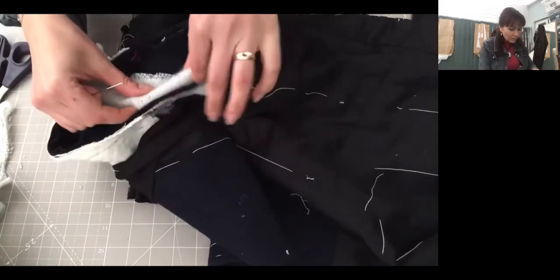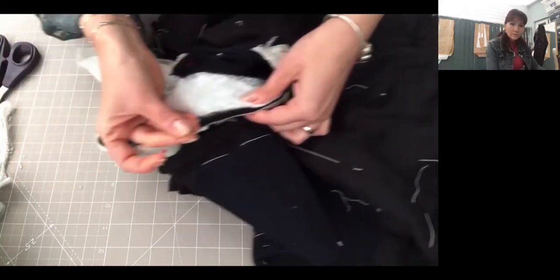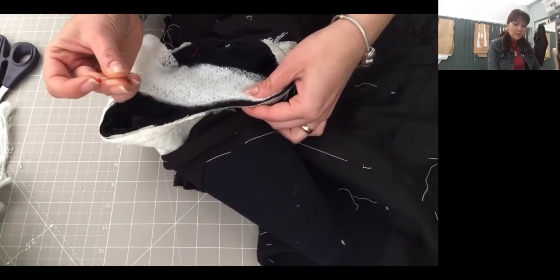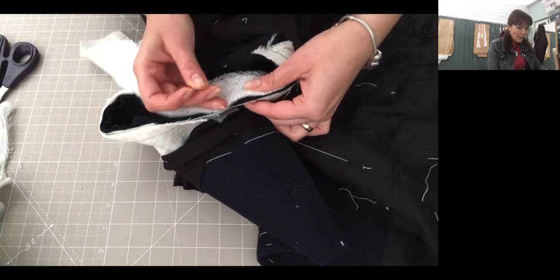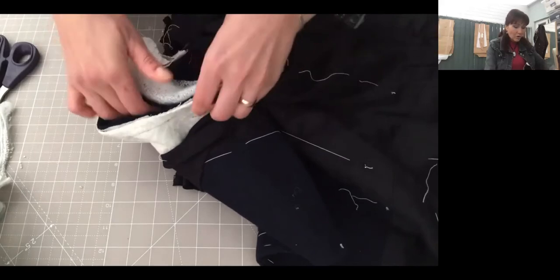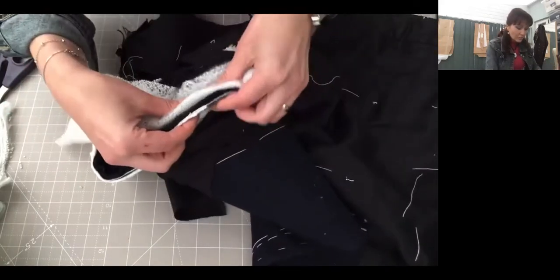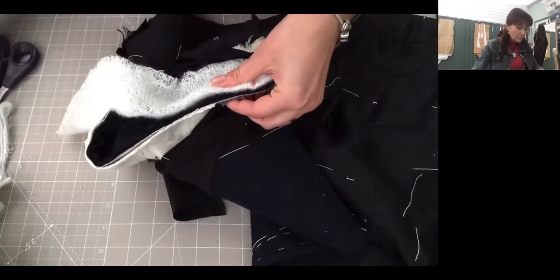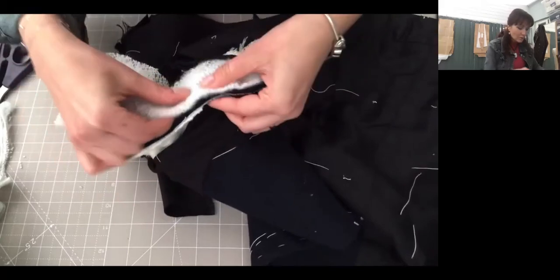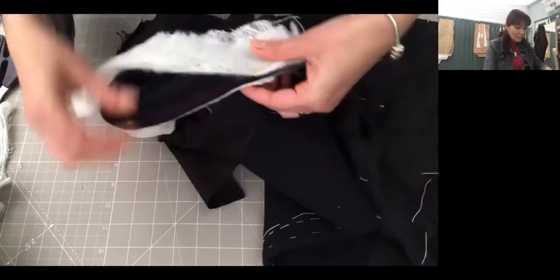I will advise you to use those big pins, you see that, big pins, because you can see the head. Otherwise the smaller ones just sink inside and then you can't find them or can't see them. And you just follow your seam allowance. Just don't stretch your ice wool, that's quite an important part.